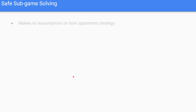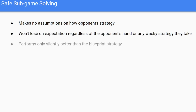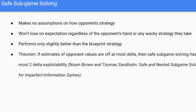Some notes on safe subgame solving: it makes no assumptions on the opponent's strategy. One problem is it performs basically the same as our blueprint strategy, so even if there is room for improvement, we won't be taking it. There's a theorem from the Libratus team that states: if the estimate of the opponent's values are off by at most delta, then safe subgame solving has at most two-delta exploitability.